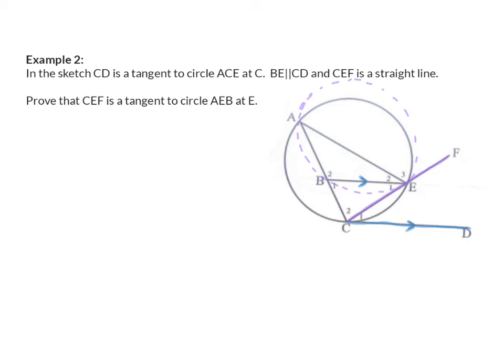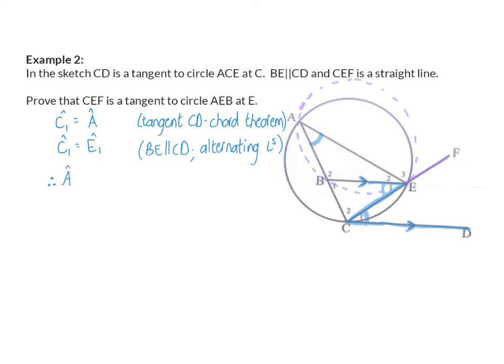In this case, we do have information about the parallel lines and tangent to the original given circle. So, I'm going to start with what was given. Because of the tangent CD, we can form the angle between the tangent and chord CE, and right across from that we can form angle A, so we know that they are equal. We can also say that angle C1 is equal to angle E1 with our alternating angles. And this means we can make the conclusion that angle A will also be equal to angle E1.